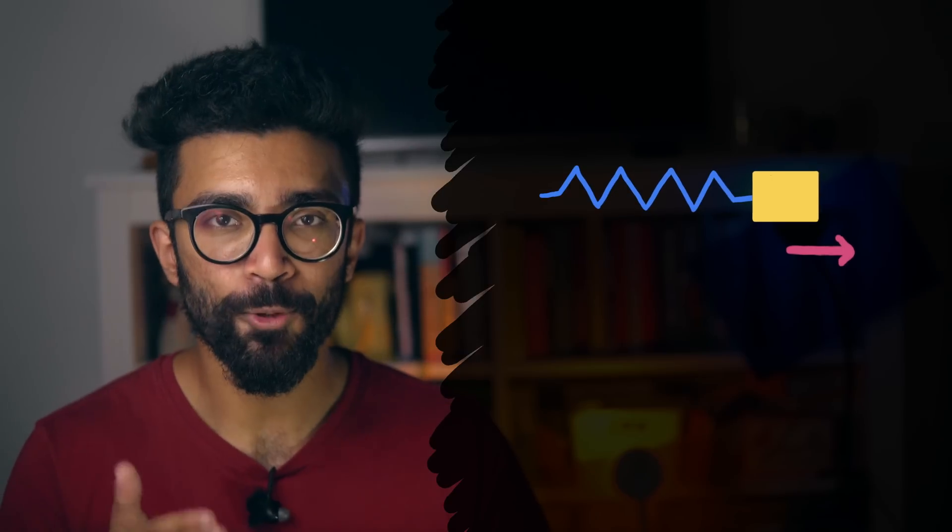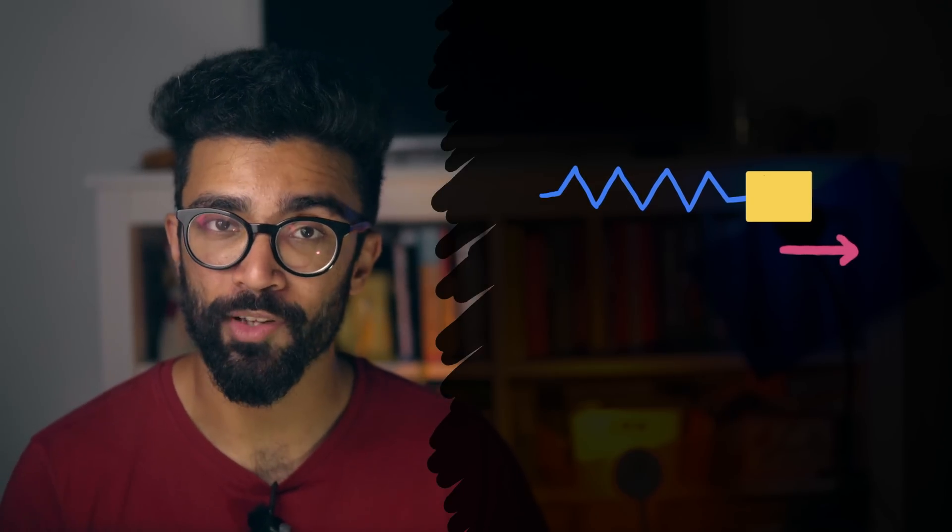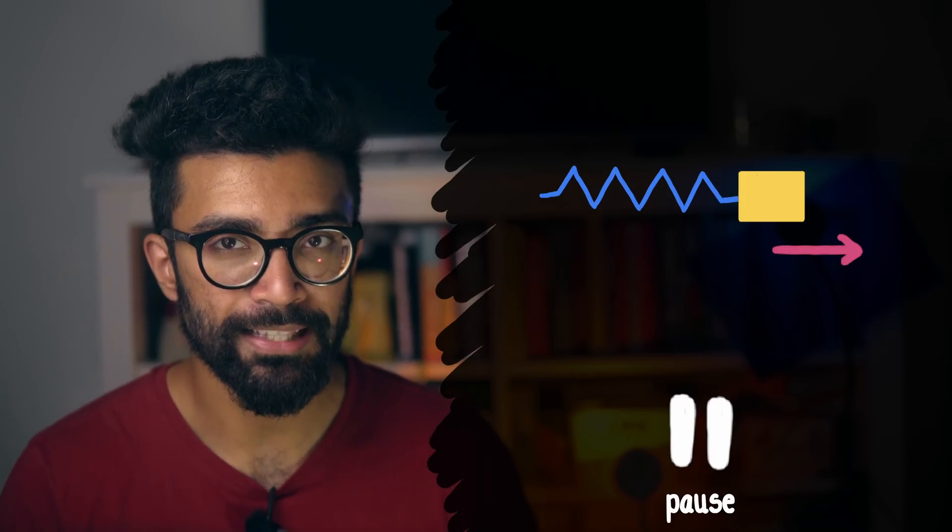So our mass actually moves past the equilibrium position, at which point the spring is being compressed and the force is now in this direction trying to push the spring back to its natural length again. It's getting stronger and stronger as the mass travels further and further this way. The force acts to decelerate or slow down the mass until it reaches its maximum displacement in this direction and then it turns back. And the mass spring system therefore bounces back and forth forever since we don't have any frictional forces in our system at this point.